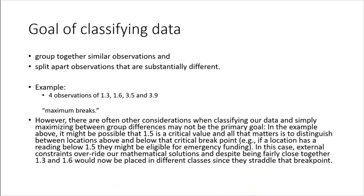The main goal of classifying data is to make sure that you are maximizing the difference between classes and minimizing the difference in the values within each class. So you want to make sure you're grouping similar observations together and then split apart observations that are very different. So you might have a set of values like 1.3, 1.6, 3.5, 3.9, and the obvious place to break this would be between 1.6 and 3.5, because these are more similar, these are more similar, and then there's a bigger difference between them. And that would be a natural breaks kind of classification scheme.